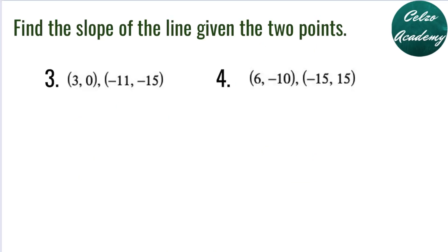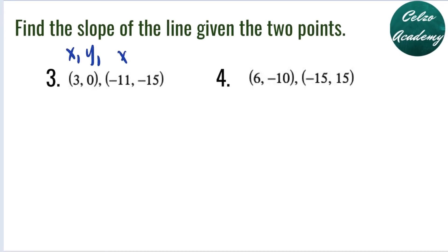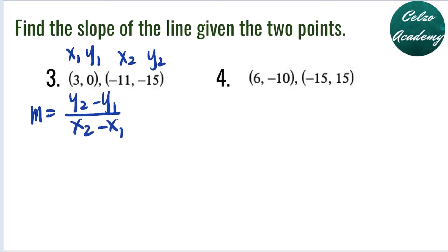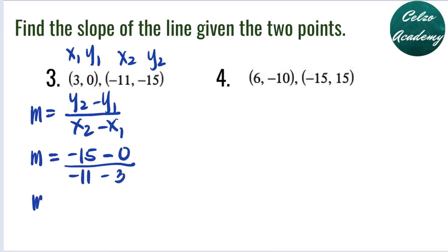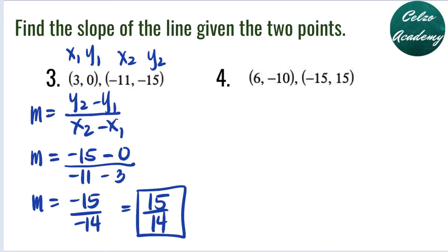Question 3: points (3, 0) and (-11, -15). Our first pair is x1, y1; second pair is x2, y2. The formula for slope is y2 minus y1 over x2 minus x1. Plugging in: negative 15 minus 0 over negative 11 minus 3. Negative 15 minus 0 is negative 15. Negative 11 minus 3 is negative 14. Negative divided by negative is positive, so we have 15 over 14. Leave your answer as an improper fraction, so the answer for number 3 is 15 over 14.